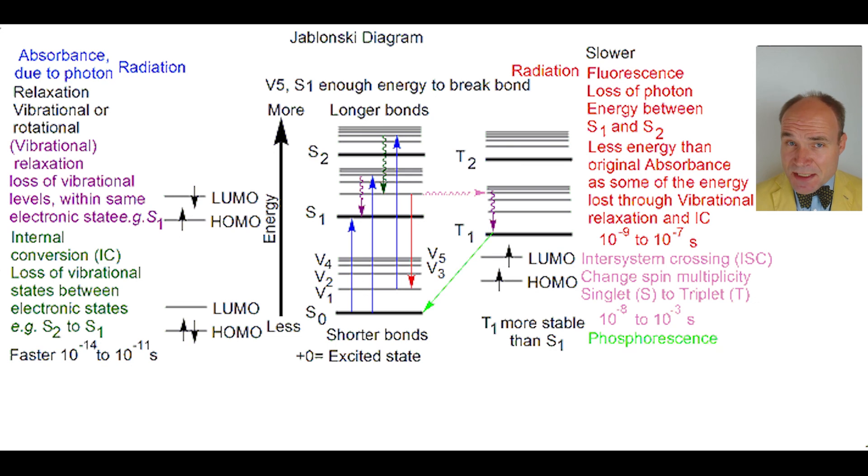Ultimately, phosphorescence loss of radiation causes the electron in T1 state to return to S0 ground state over a 10^-3 to 100 seconds time period.